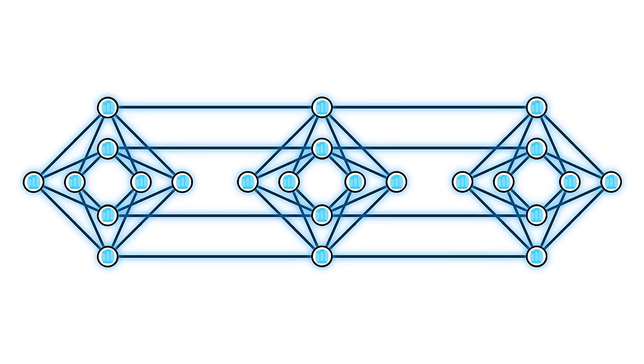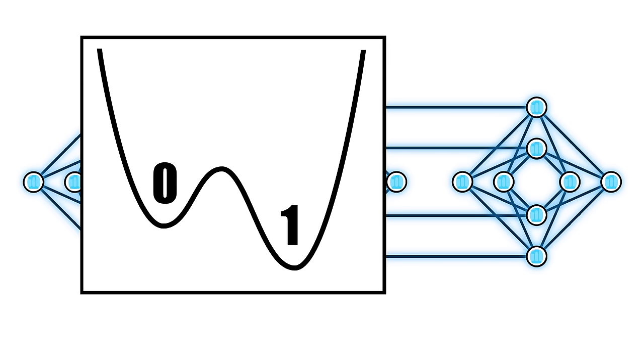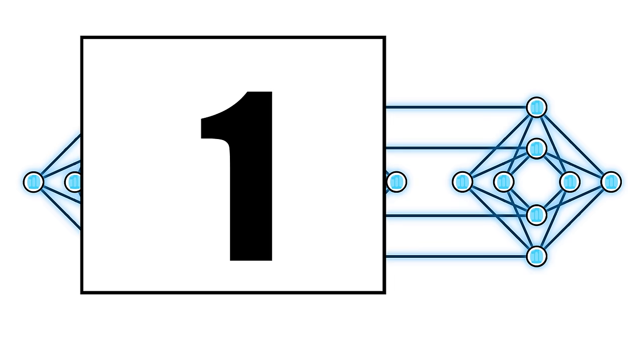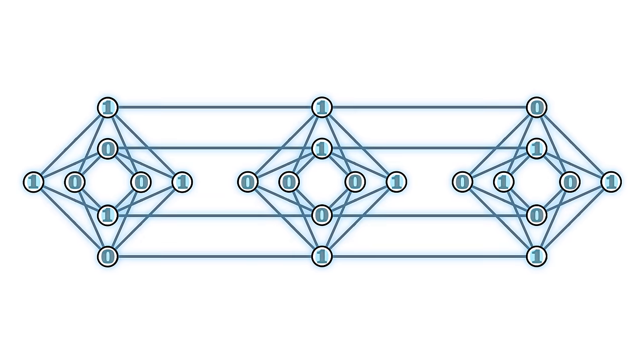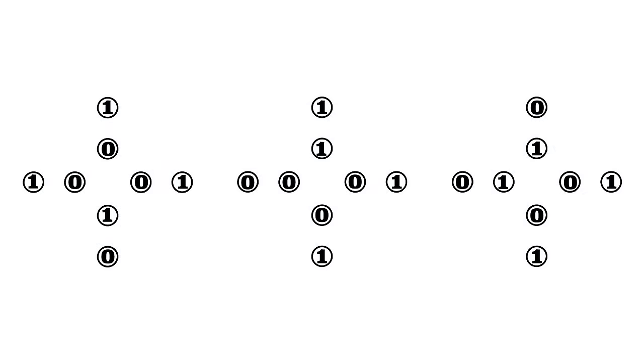This large quantum object then changes the probability that each qubit will end up in the zero or one state. Finally, at the end of the annealing, each qubit ends up as either zero or one and this final state is the minimum energy state of your problem, or one very close to it. All of this happens in our chips in around 20 microseconds.